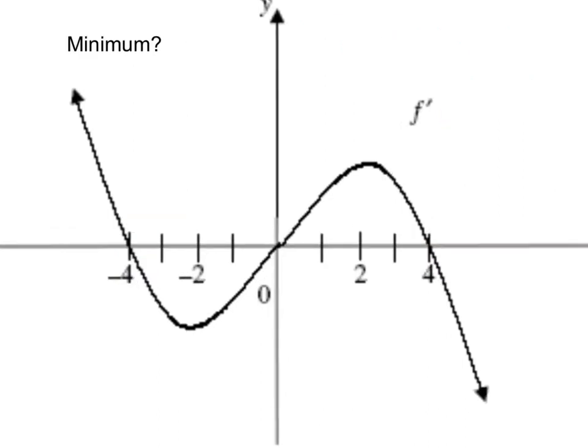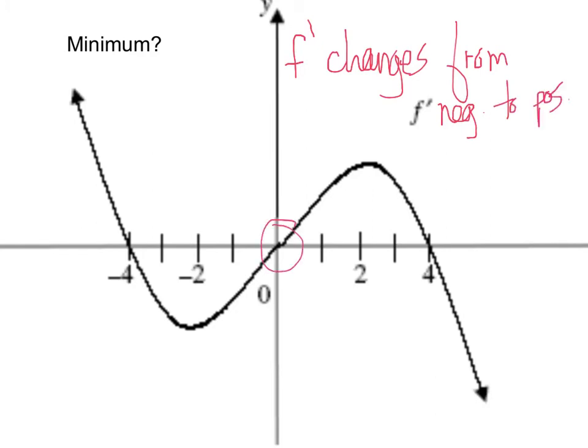Of course, the follow-up would be where is f at a minimum? Well, a minimum occurs when the function changes from decreasing to increasing. Therefore, the derivative changes from negative to positive. That occurs at zero, at x equals zero. Now, we don't know the y-coordinates for either of those things, so all we're saying is where it's at a minimum. We're not actually going to say what the minimum value is.